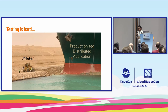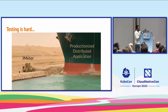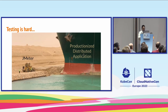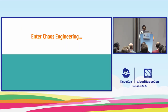Testing is hard. You have a productionized distributed application and you're trying to test it with something like JMeter — it's hard. We cannot do that, so we need some other mechanism. And that's where we enter chaos engineering.